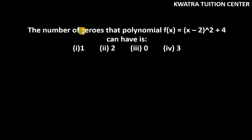Let's do the last one. It says the number of zeros that polynomial f(x)=(x-2)²+4. So what do you need to do here? First, we need to solve this. So this will be x².